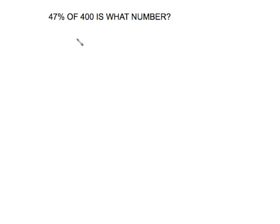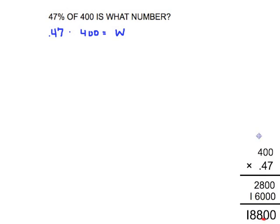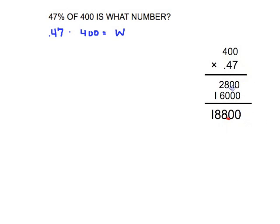Third example is the same kind of setup, it's just the sentence structure that has been varied a little bit. It begins with 47 percent, which is the decimal 0.47, of is times 400, is what number? So all this did was move our variable over to the right side, which is okay because it's alone.